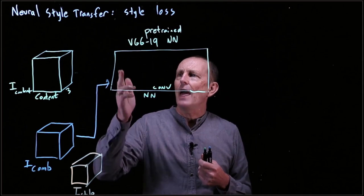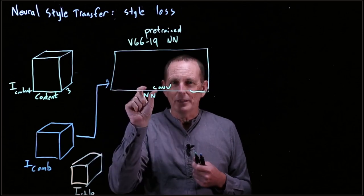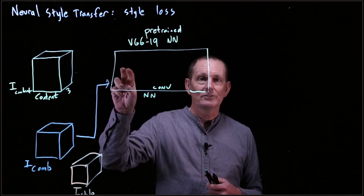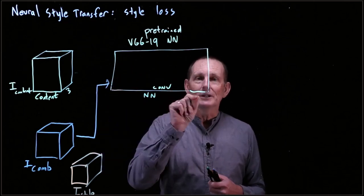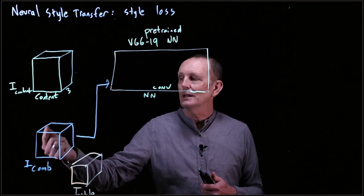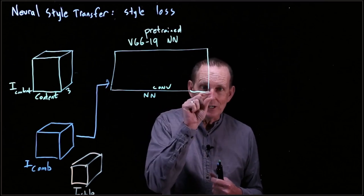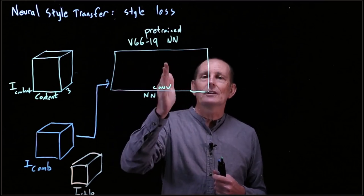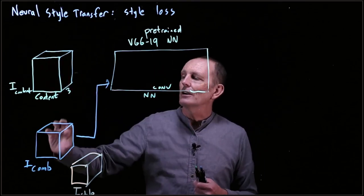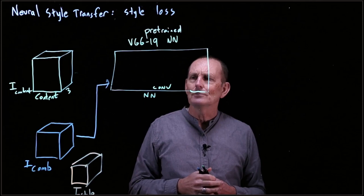At the very first convolutional layers, outputs only reflect small local regions. For example, with three-by-three convolutions, each output is only affected by a three-by-three portion of the input. As we go deeper in the network, the receptive field of each output covers a larger area of the original image.